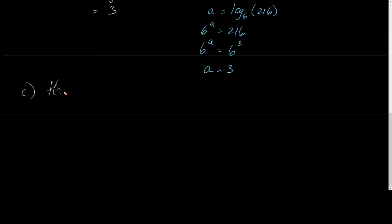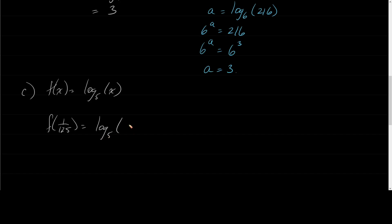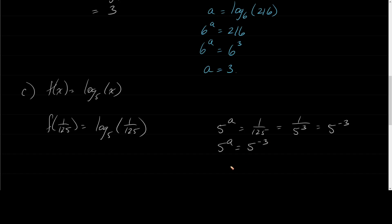Let's say that f of x was log base 5 of x and I asked for f of 1 over 125. So we're going to say this becomes log base 5 of 1 over 125. We can think of this as 5 to some power equals 1 over 125. Well, 1 over 125 is 1 over 5 cubed, which is 5 to the negative 3. So 5 to the a equals 5 to the negative 3, which tells us a is equal to negative 3.